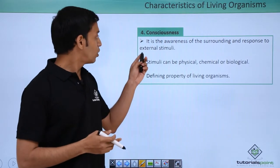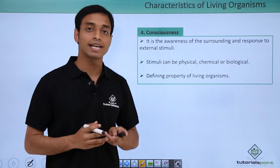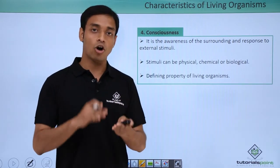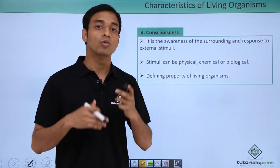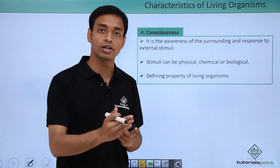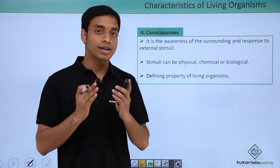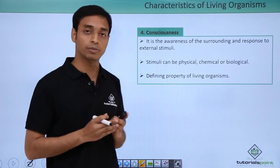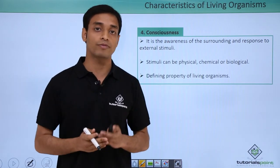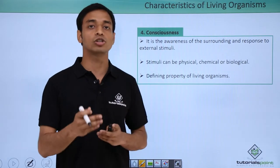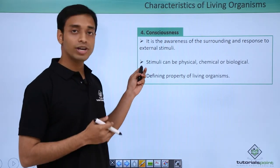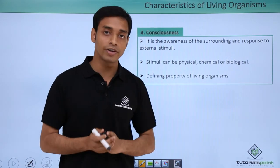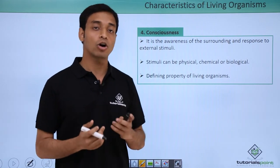The fourth characteristic of living organisms is consciousness — the awareness of surroundings and the response to stimuli. Stimuli can be physical, chemical, or biological. For example, if I touch a hot object, I remove my hand instantly because my sense organs detected heat and the brain signaled the response. Animals have specific sense organs for this, but plants also respond to stimuli — for example, bending towards light. Non-living organisms cannot feel or respond to stimuli, so consciousness can be considered a defining characteristic.